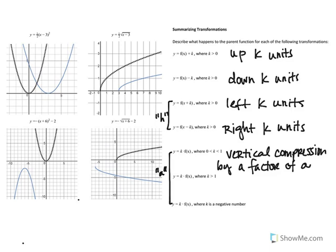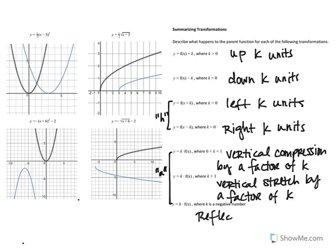When we have a k that is greater than 1, this is going to cause a vertical stretch by a factor of a – or in this case actually k. I'm going to go change that other a to a k. And when we have a negative number, that is going to be a reflection on the x-axis.